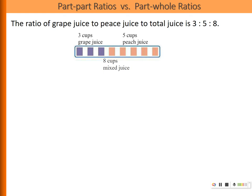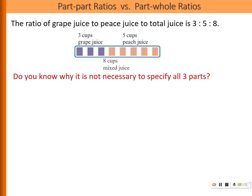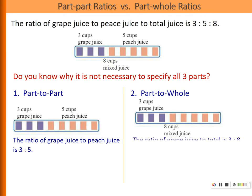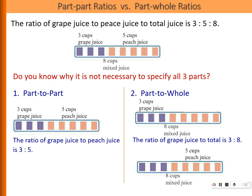We can subdivide ratio as a multiplicative comparison into two subtypes: part-part comparison and part-whole comparison. Consider a ratio made up of three to five to eight — it's the part to part to whole type of ratio. It's not necessary to specify all three parts because if you know any two, you can always generate the third. If we focus on three cups to five cups, it's a part-part ratio. Whereas if we focus on three cups to eight cups, it's a part-whole comparison. Here we say the ratio of grape juice to peach juice is three to five, whereas here we say the ratio of grape juice to total juice is three to eight. We can also compare the peach juice to the mixed juice.